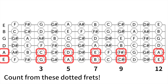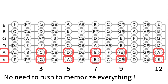Once you know the dot-fret notes, you can easily figure out the notes on the frets in between. For example, on the sixth string: open E, third fret G, fifth fret A, seventh fret B, ninth fret C-sharp, twelfth fret E — the octave of the open string. By knowing these, you can quickly derive that the fourth fret is G-sharp, the sixth fret is A-sharp, the eighth fret is C, the tenth fret is D, and so on. Remember, this is not about rushing to memorize everything, but gradually familiarizing yourself with these notes over time. As you become more comfortable with the fretboard, this knowledge will become second nature.